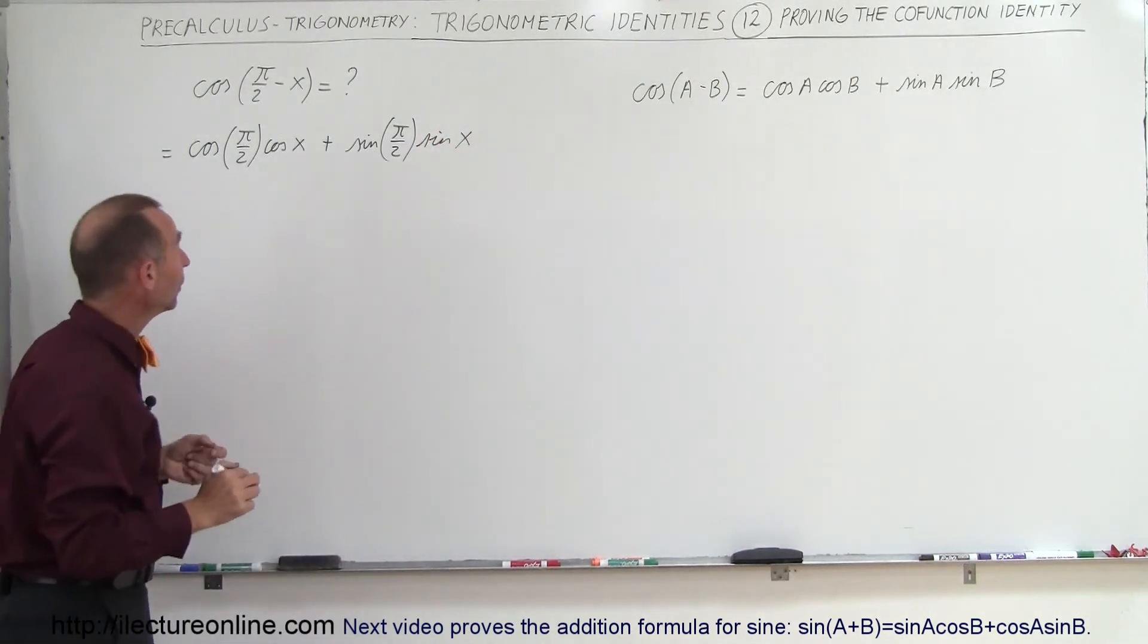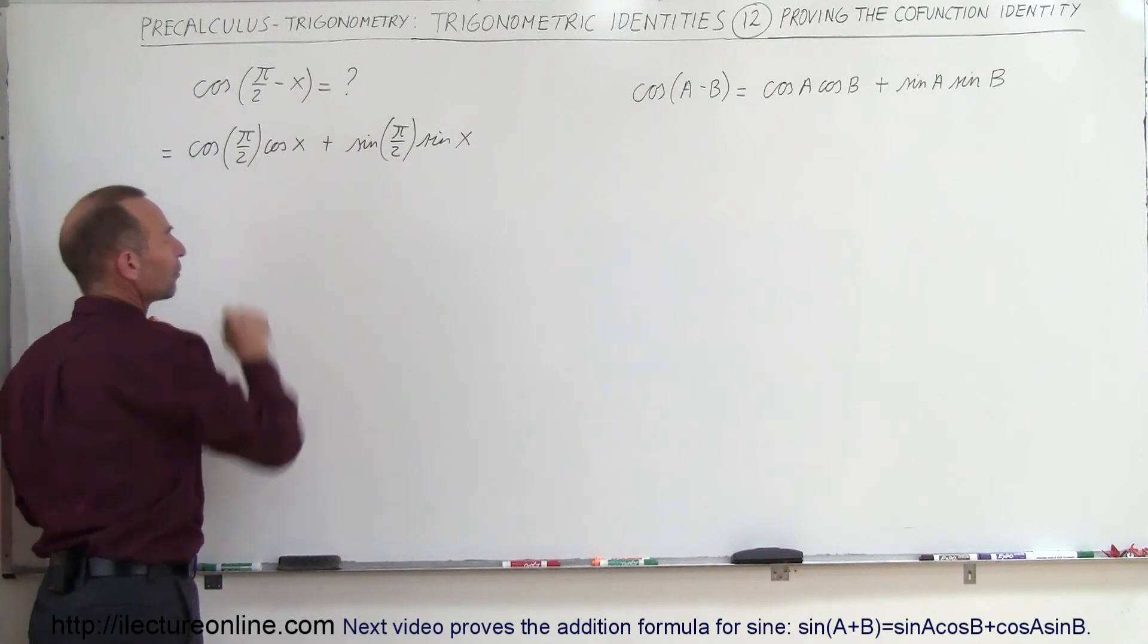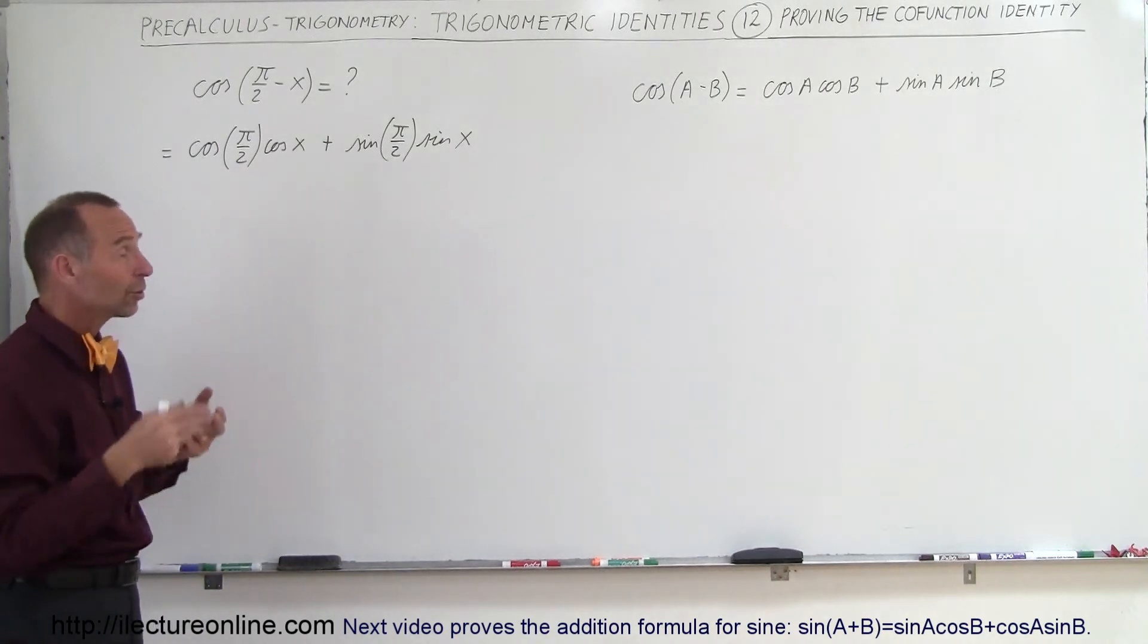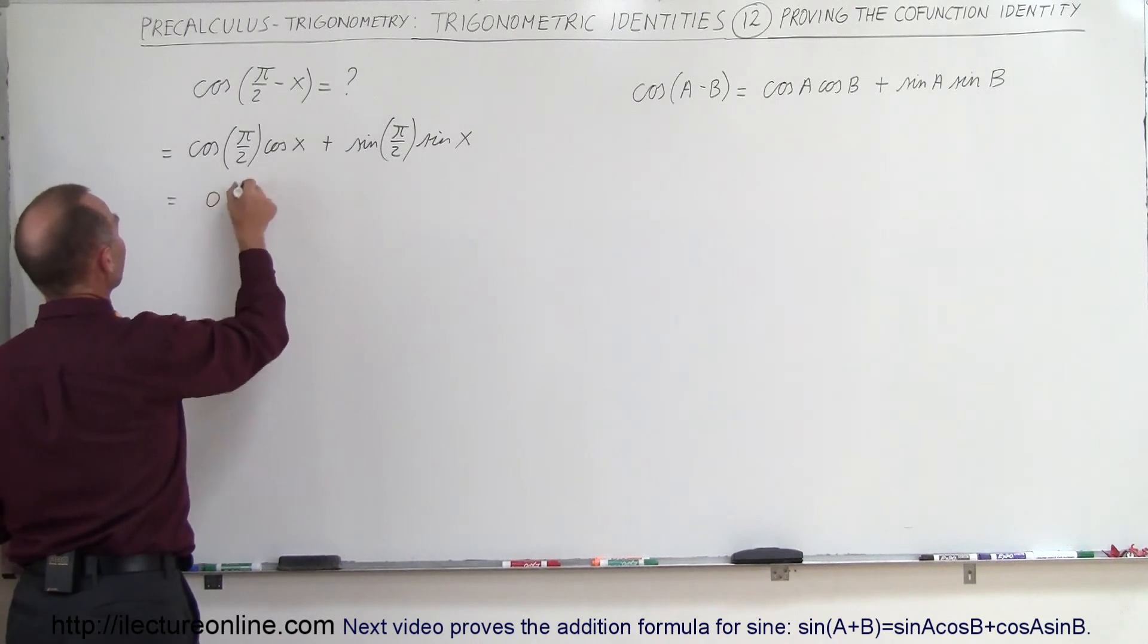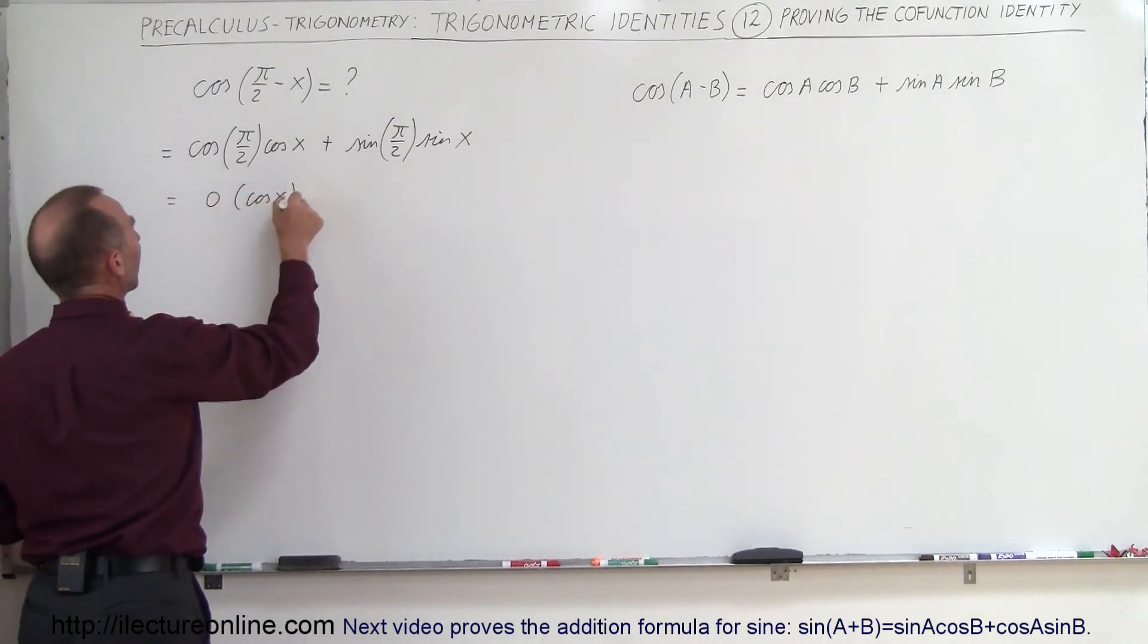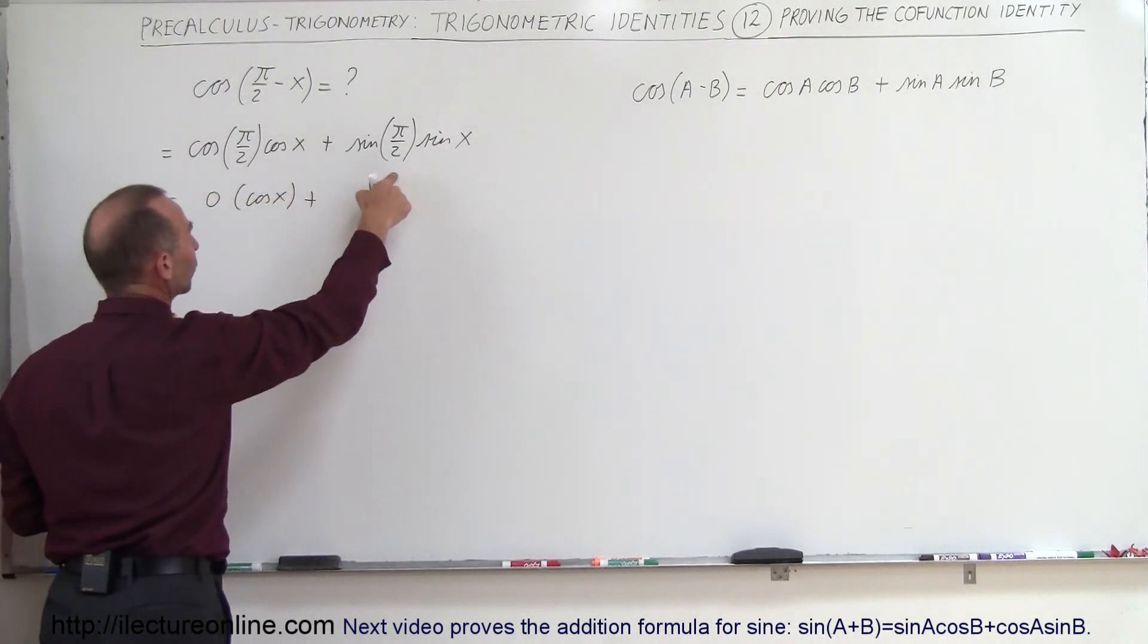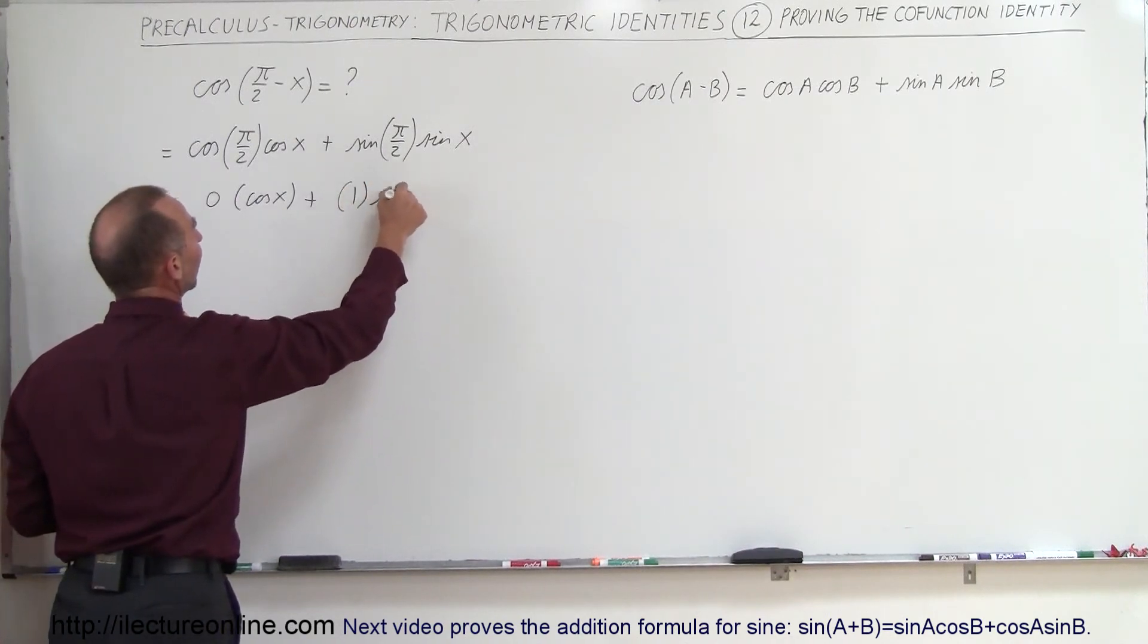Now what is the cosine of pi over 2? Well, pi over 2 is 90 degrees, and the cosine of 90 degrees is equal to 0. So this is equal to 0 times the cosine of x, plus, and the sine of pi over 2, or 90 degrees, is equal to 1 times the sine of x.